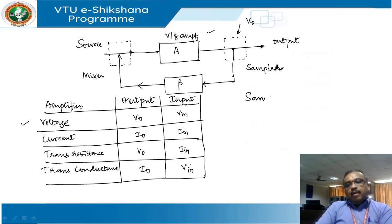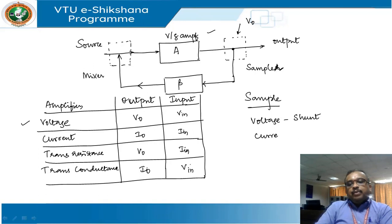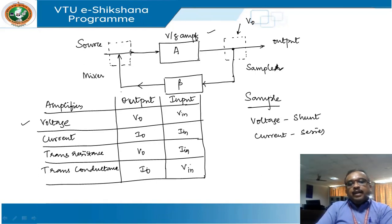When I want to sample a voltage, I take it in shunt. When I want to sample a current, I connect it in series. At the input side, when mixing a voltage value, I connect it in series — because two voltage sources in parallel would be nonsensical. When it comes to current, mixing happens in shunt.